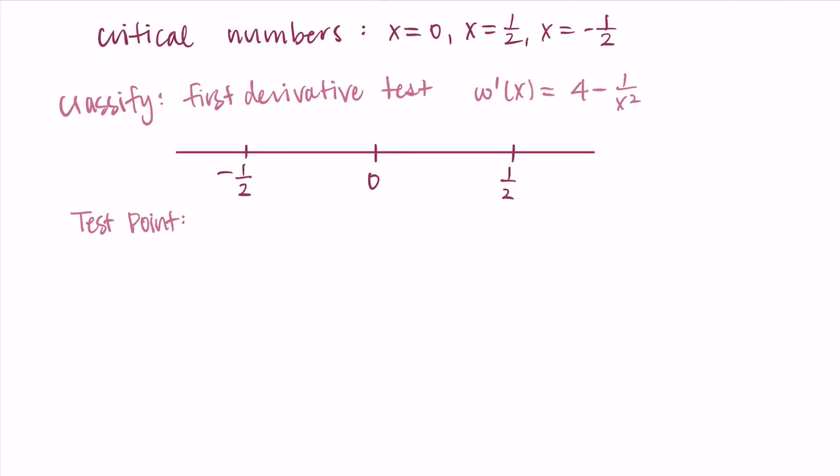I'm going to choose a test point in each of the intervals created by the critical numbers. My test points are −1, −1/4, 1/4, and 1. The critical numbers are where the derivative is zero or undefined — our candidates for local max or min. In between these, the derivative can't switch sign without passing through zero, so we only need to test one point per interval.